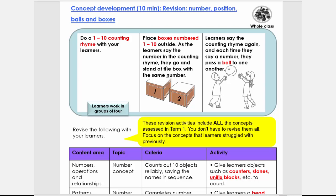So as the learners say the number in the counting rhyme, they go then and stand at that box. You can make this a real fun activity, and especially if you can do it outside. So lastly, what they're going to do is they're going to say the counting rhyme again, and each time if they say the next number, they're going to pass a ball to you, to a sibling, or at school to a friend.